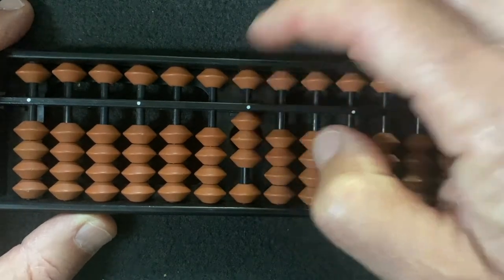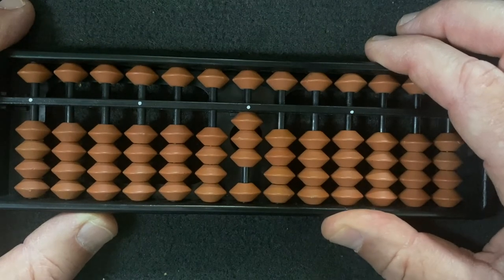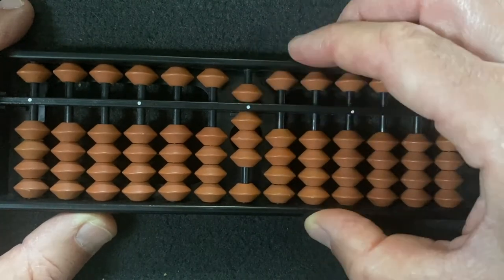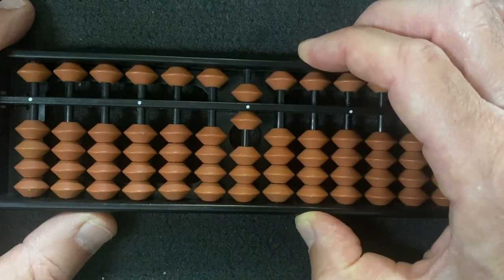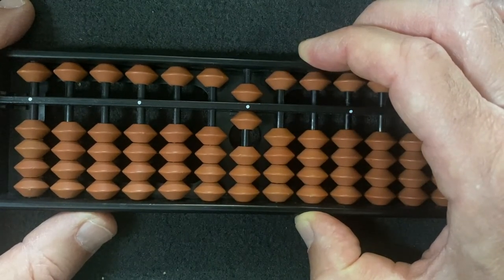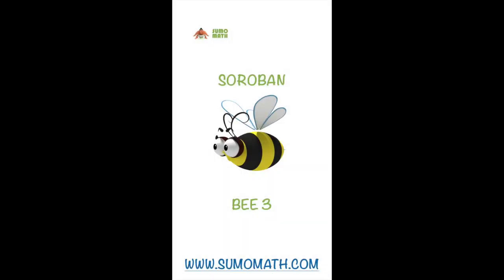So again let's look at that finger movement. To add three we simply add five with our index finger and then subtract two three's five pair for an answer of six. We'll be right back.